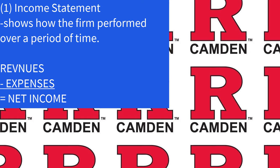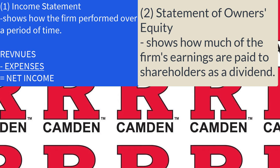The second statement is the statement of owner's equity. This is a bit of a less important statement. All it really does is show you how much earnings the company has retained in the business — in other words, reinvested back in the business. And of those earnings, how much is the company now paying out to shareholders as a dividend? A dividend is giving profit back to the shareholders.